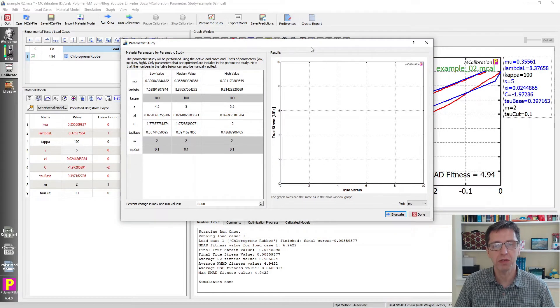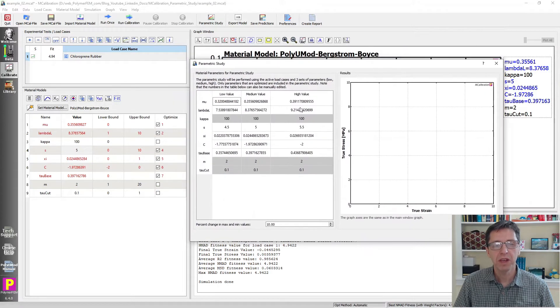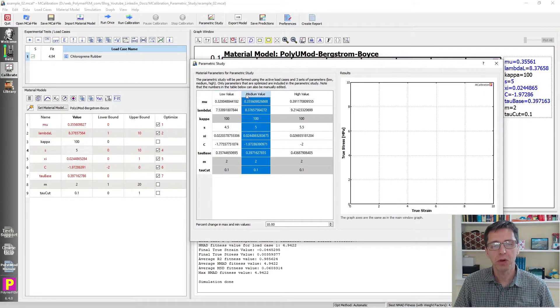There are a number of values here in the graph to the right. If you look carefully there's a column low, medium and high values. The medium values are actually the same as the values in the main window.